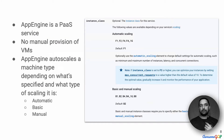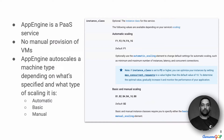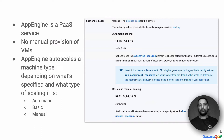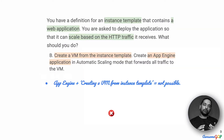App Engine is a platform as a service — you do not manually provision VMs here. Instead, App Engine takes a particular machine type you select and automatically scales it based on the number of requests or other parameters. You have three scaling options: automatic, basic, or manual. But none of them have you provisioning a VM manually and assigning it to App Engine. So App Engine plus creating a VM from an instance template is just not possible — we can eliminate option B.